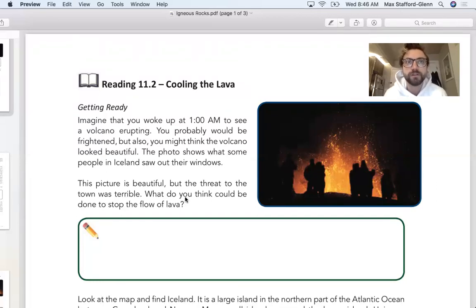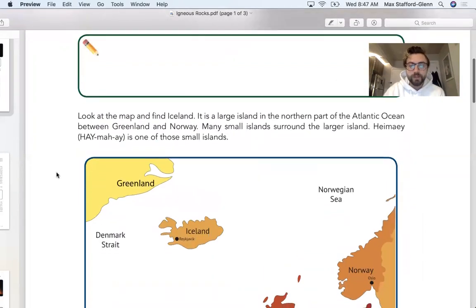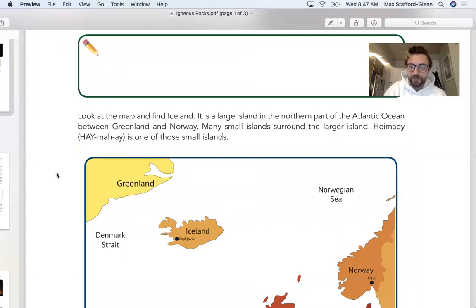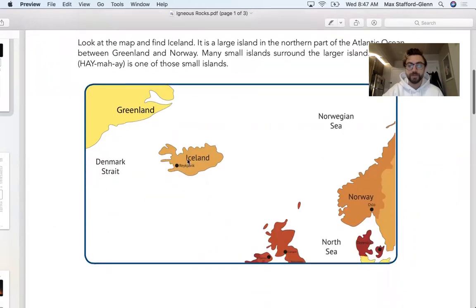Well, I know that lava is super hot, and whenever I see a fire I put water on it. So maybe you could put water on the edge so that it cools down and hardens and stops flowing. I don't know, just an idea. Look at the map and find Iceland. It is a large island in the northern part of the Atlantic Ocean between Greenland and Norway. Heimaey is one of those small islands.